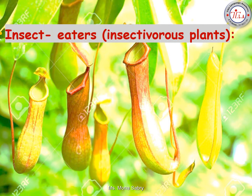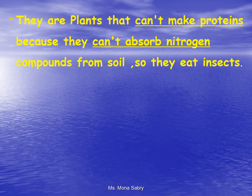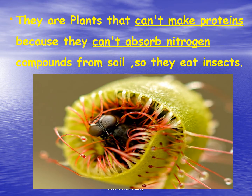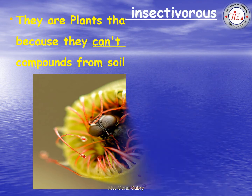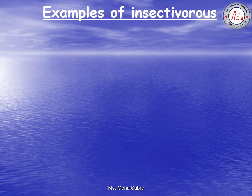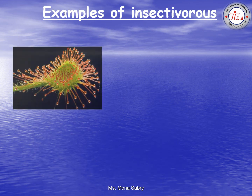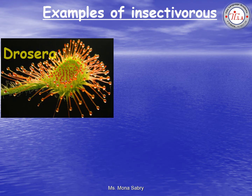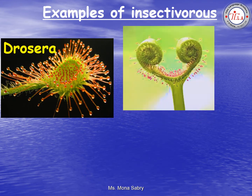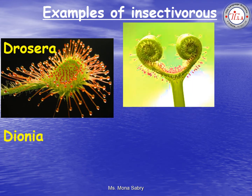Insect-eaters, or insectivorous plants, are plants that cannot make proteins because they cannot absorb nitrogen compounds from the soil, so they eat insects. Examples of insectivorous plants include Drosera and Dionaea.